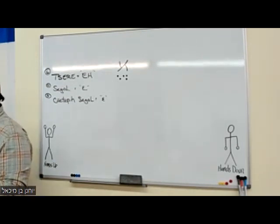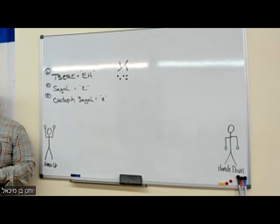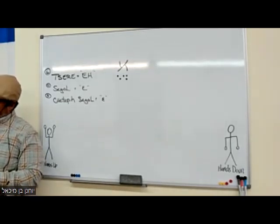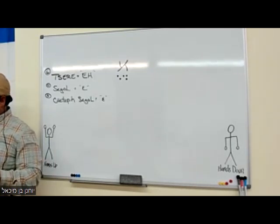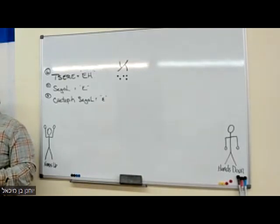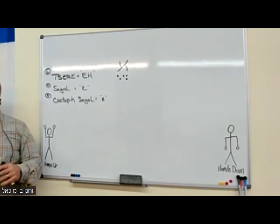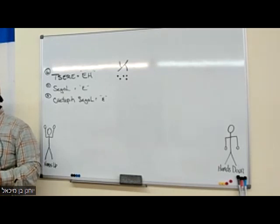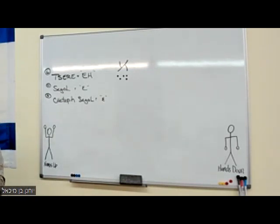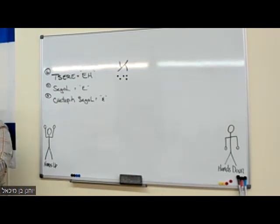There are other combinations. If we had tsere — the two dots — with a yud following it, that makes an 'ei' diphthong sound, like the 'ei' in the word 'eight.' Similarly, segol with a yud following it makes an 'ei' sound, like in the word 'elohenu.' Diphthongs are combinations of marks and letters that work together to make one sound. We'll discuss diphthongs more later.